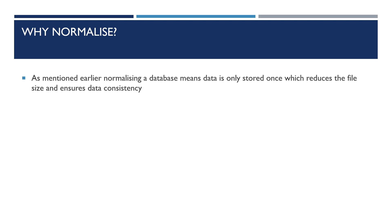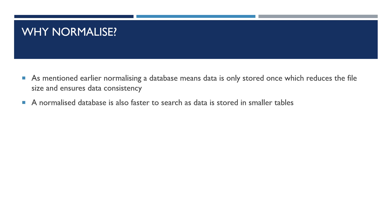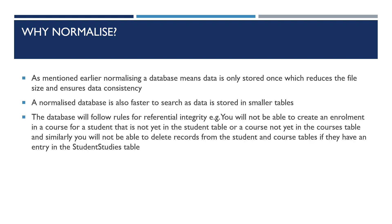Normalising a database means data is only stored once, which reduces the file size and ensures data consistency. A normalised database is also faster to search as data is stored in smaller tables that are more easily indexed. The database follows rules for referential integrity — you won't be able to create an enrolment in a course for a student not yet in the student table, or for a course not yet in the courses table, and similarly you won't be able to delete records from the Student or Course tables if they have an entry in the Student Studies table.